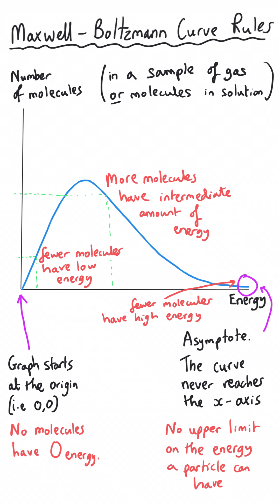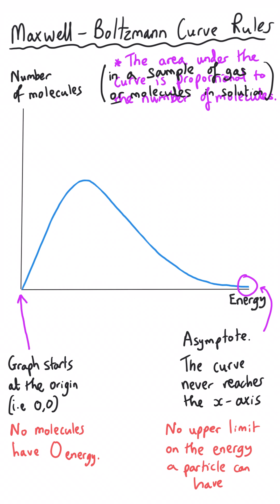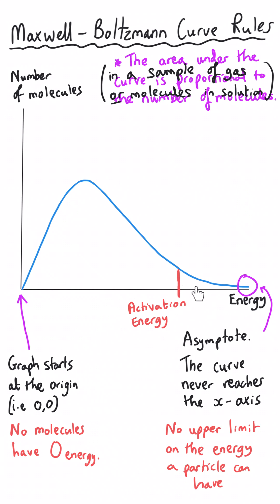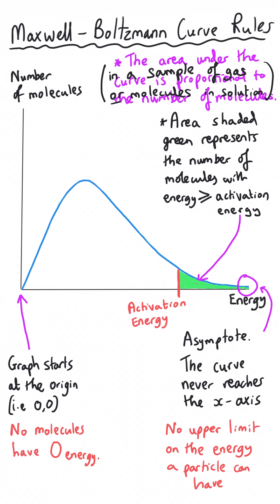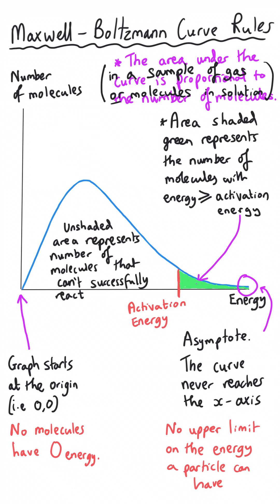The area under the curve is proportional to the number of molecules in our sample. We can take an arbitrary amount of energy — for example, the activation energy, which is the minimum energy needed to start a reaction. All molecules to the right-hand side of the activation energy on the x-axis have energy equal to or greater than the activation energy. If we shade that area in, it represents the portion of molecules that can react if they collide. The molecules to the left cannot react.